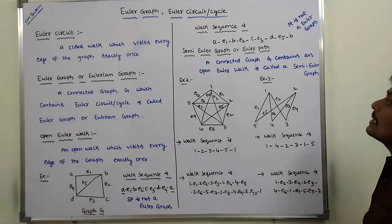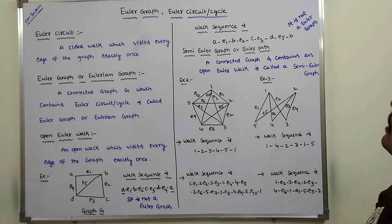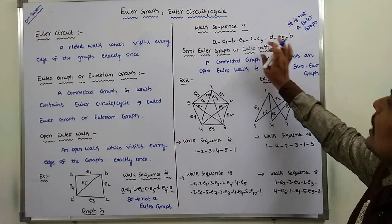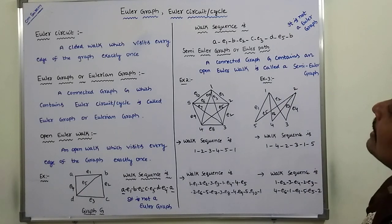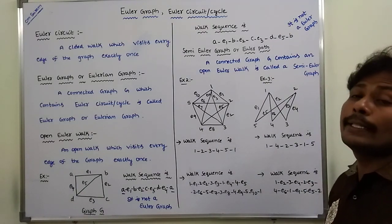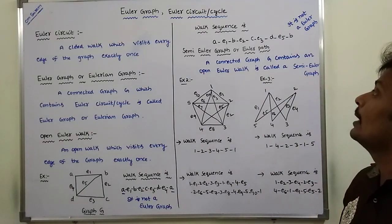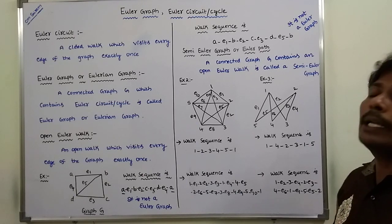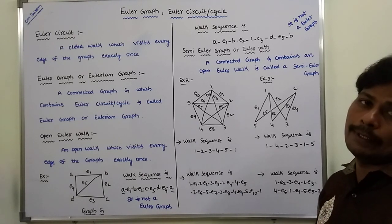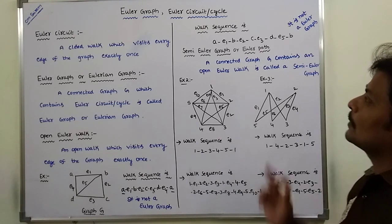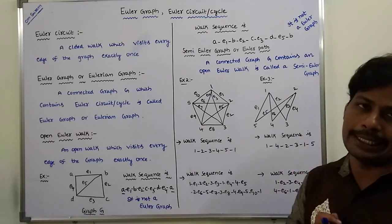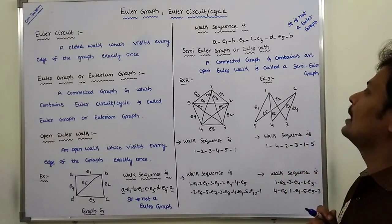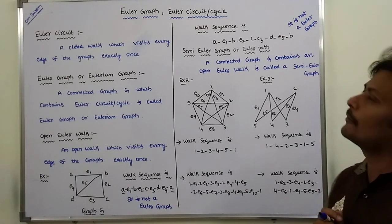It is not a Euler graph, but it visited all the vertices in the given graph. Since not all edges are visited, it is called a semi-Euler graph.